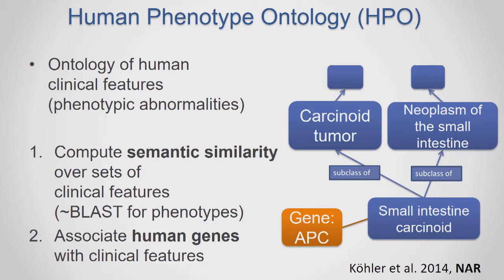An important component to enable precision medicine, or at least a more precise medicine, will be to have tools and methods to mathematically compute similarity between sets of clinical features of patients or diseases, because in the end what we're trying is to correlate the similarity of clinical features with genomic variation.